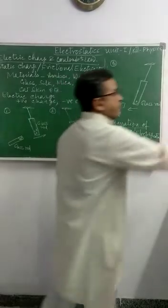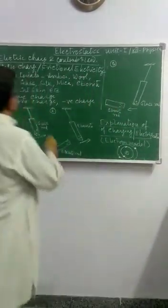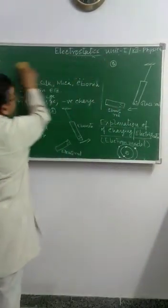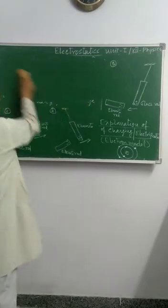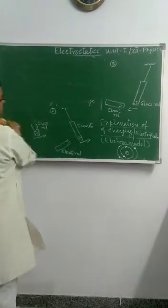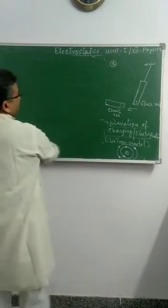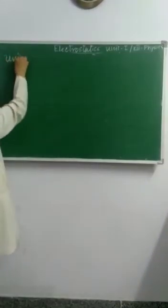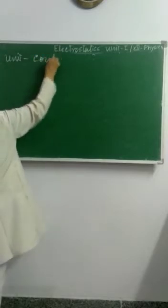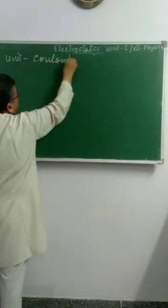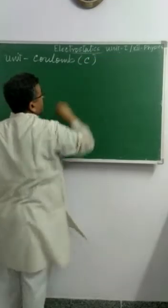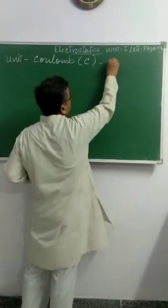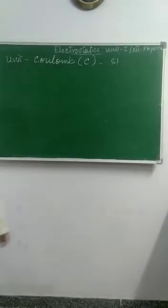Now, the unit of electric charge. The unit of electric charge is Coulomb, represented by C. This is the SI unit of electric charge.